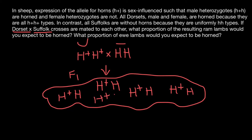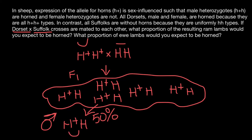Fifty percent of the F1 herd are going to be males, and all males who are heterozygous are going to be with horns. The other 50% of the herd are going to be females. Those females are going to have the same heterozygous genotype, but all of them are going to be without horns.